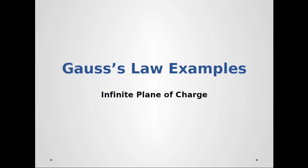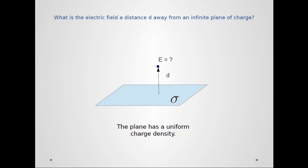Another example with Gauss's law - we're going to look at the infinite plane of charge. The blue parallelogram represents an infinite plane of charge that goes off in all directions. The plane has a uniform charge density given by σ. What is the electric field some distance d away from this infinite plane of charge?